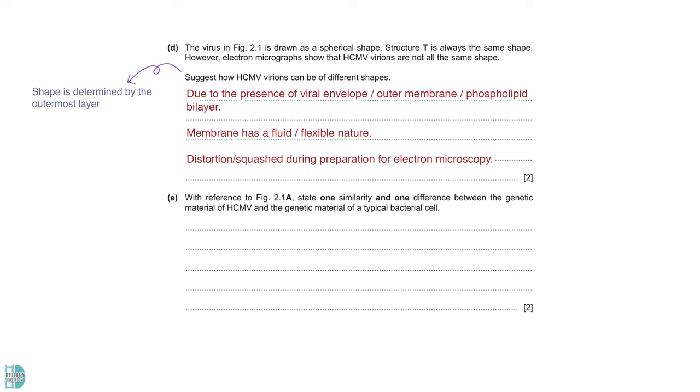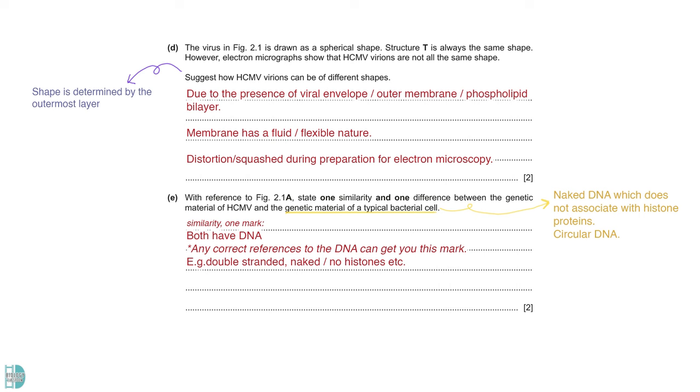Question E. State one similarity and one difference between the genetic material of HCMV and the genetic material of a typical bacteria cell. To answer this question, you need to know that the genetic material of bacteria is naked DNA, which does not associate with histone proteins, and is circular. According to the diagram, this virus also has DNA. Any correct references to the DNA is acceptable as well. For example, it is double-stranded, it is naked DNA, and it does not associate with histone proteins.